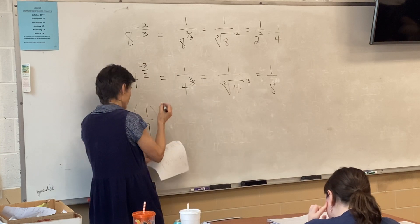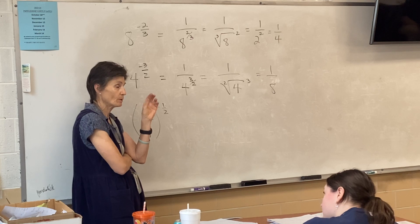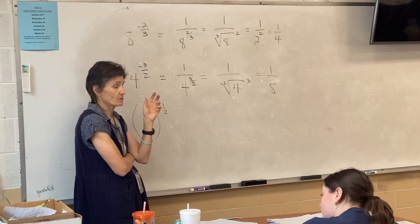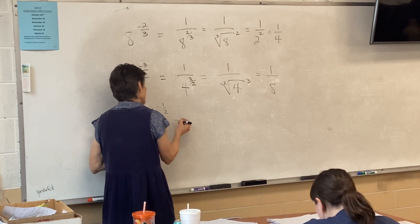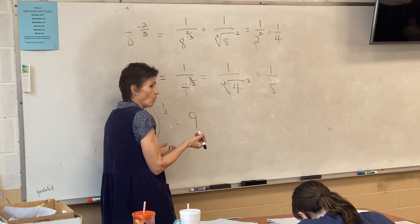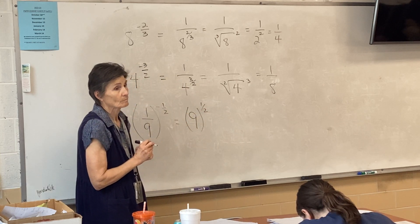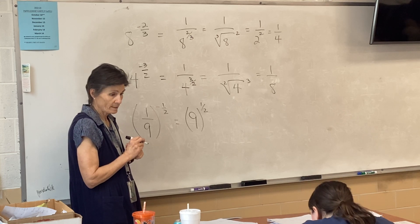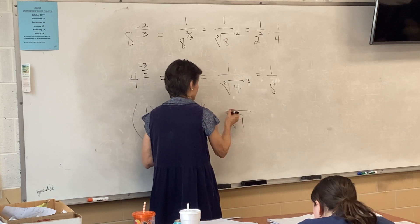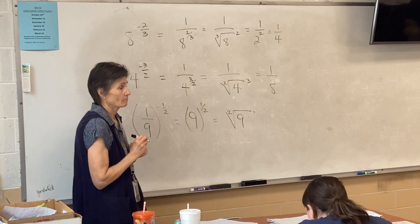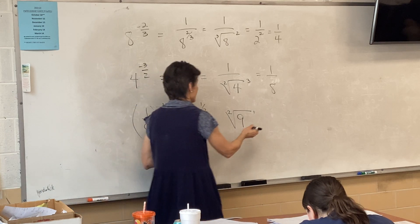Take your time — don't do too much at once. What do we handle first with ones that have lots going on? Take care of the negative first. So with a negative exponent on a fraction, it flips — now it's nine over one to the positive one-half. What does a one-half power mean? A radical. What's the square root of nine? Three. The answer is three.